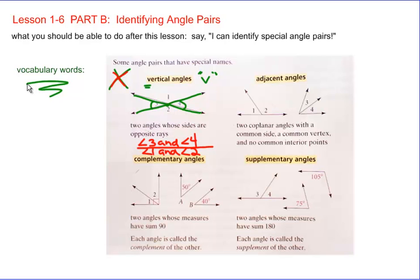Adjacent angles. I call these the side-by-sides. Adjacent means touching. So they're touching side-by-side.